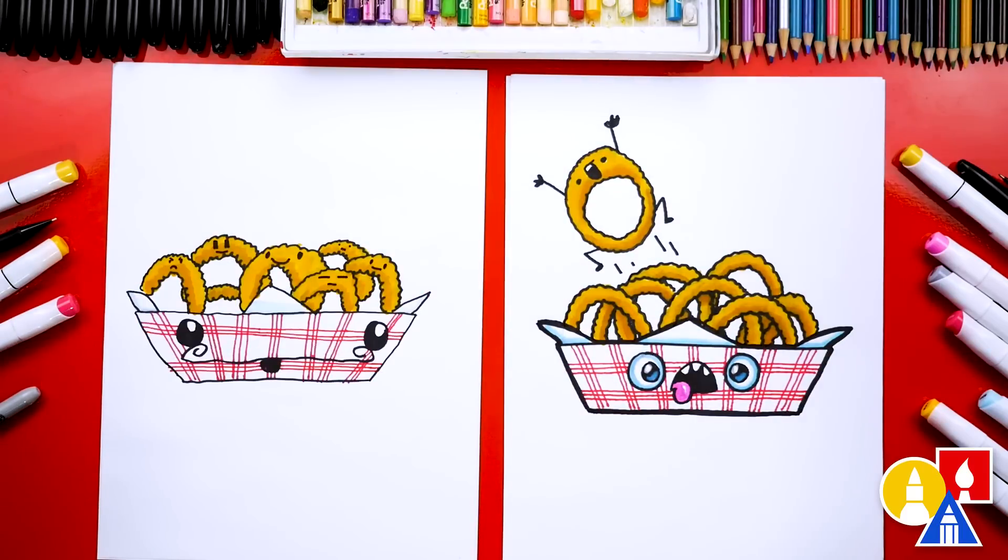Austin, give me five. We did it. We finished drawing and coloring our onion rings. Looks awesome. I especially love all of the funny faces you added. I like the one that's jumping out of yours. Yeah, he's trying to escape. He doesn't want to get eaten. Oh, no.